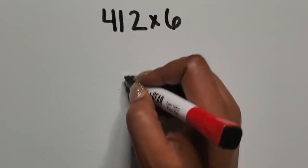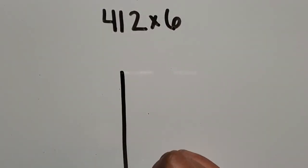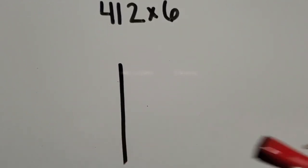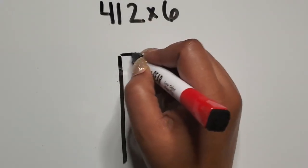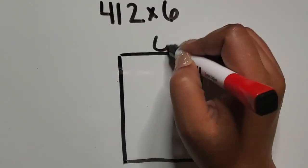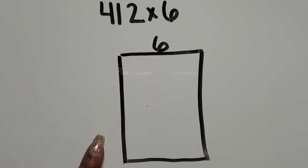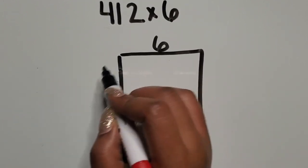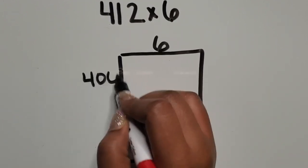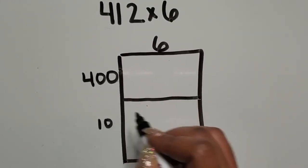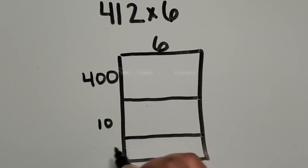Alright, so I'm going to draw my rectangle here. I know there's going to be 6 in each row, and again, I'm breaking my 412 up based on the place value, so I have 400 first, that takes up the most space, then I have 10, then I have 2.